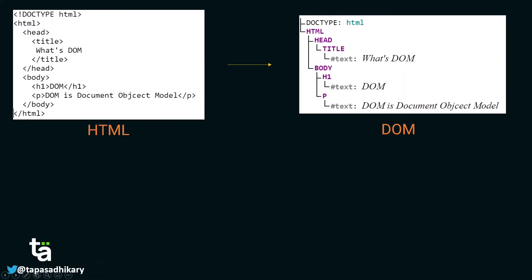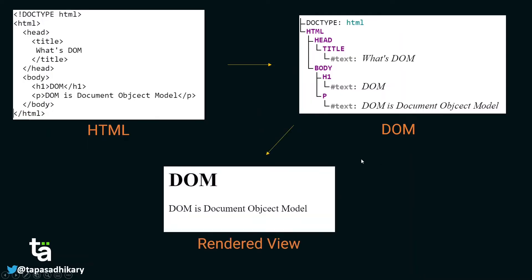The JavaScript DOM API traverses this tree — the Document Object Model tree — to retrieve pieces of information and change them. For example, to retrieve an h1 element and set or change its text using the DOM API. This document tree is also loosely called the DOM tree. Finally, when everything gets rendered in the browser we get the rendered view. So we have the HTML structure, then the DOM tree, and then the rendered view.